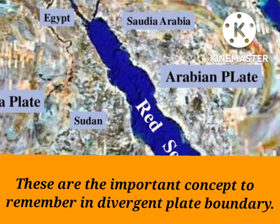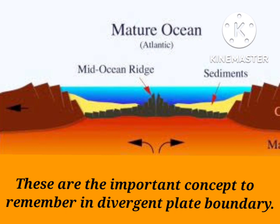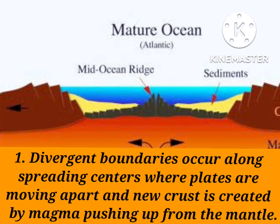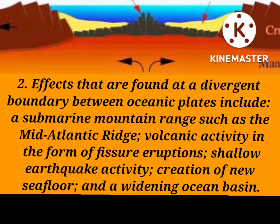These are the important concepts to remember about divergent plate boundaries. First, divergent boundaries occur along spreading centers where plates are moving apart and new crust is created by magma pushing up from the mantle. Second, effects found at a divergent boundary between oceanic plates include a submarine mountain range such as the Mid-Atlantic Ridge, volcanic activity in the form of fissure eruptions, shallow earthquake activity, creation of new seafloor, and a widening ocean basin.